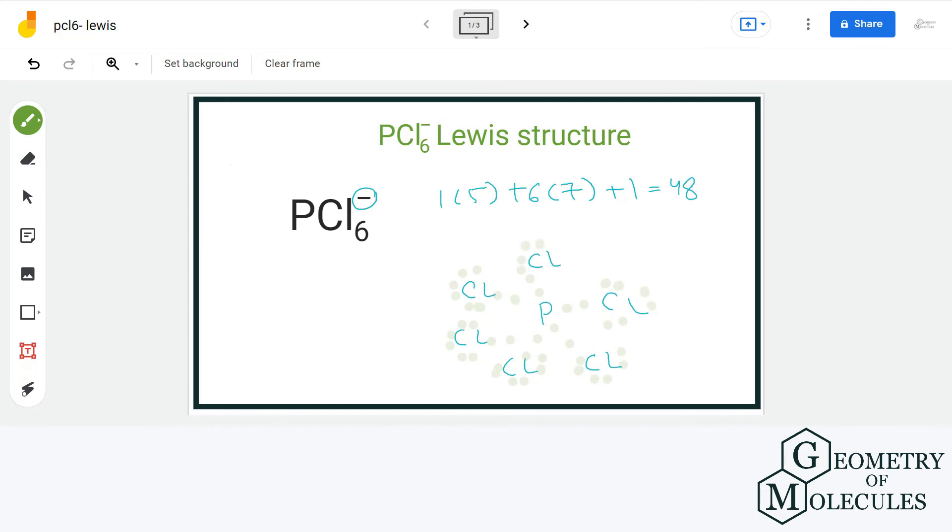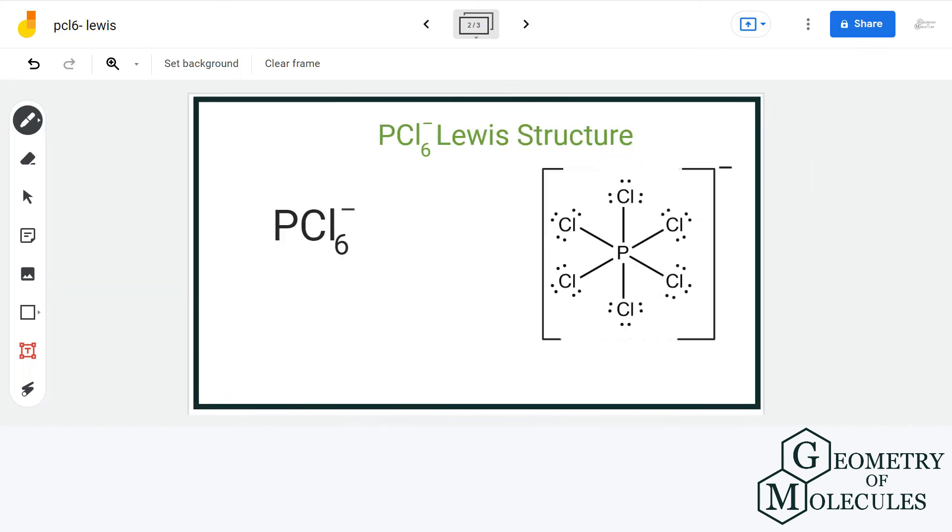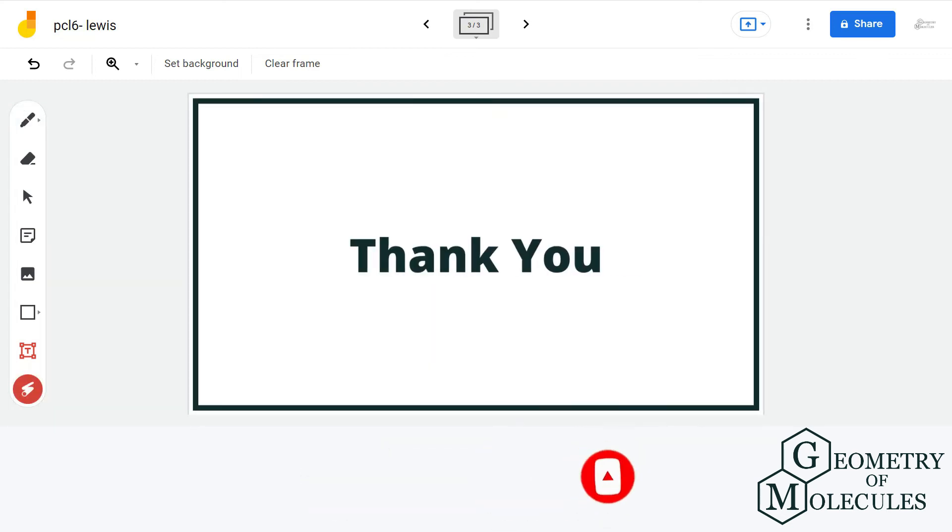Also, PCl6 minus ion is an ion and so we will enclose it within a bracket. This is the final Lewis structure of PCl6 minus ion. For more such videos, make sure to subscribe our channel and thank you for watching.